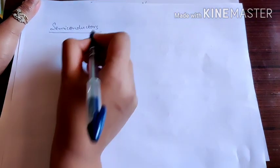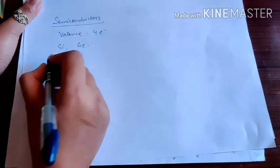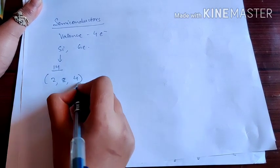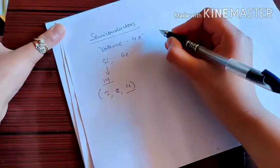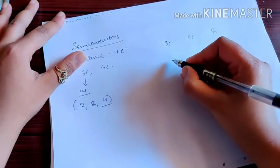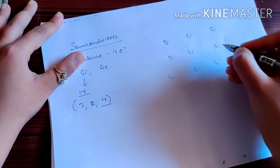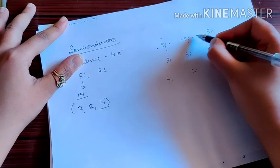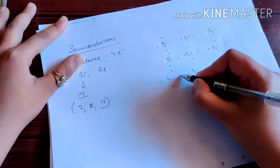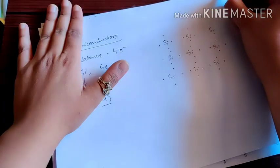We saw that in the valence shell there were 4 electrons. For example, silicon and germanium. Silicon has atomic number 14, so if we divide each shell, there will be 4 electrons in the valence shell. If we draw a lattice structure, it is very simple. Now, silicon has 4 electrons.